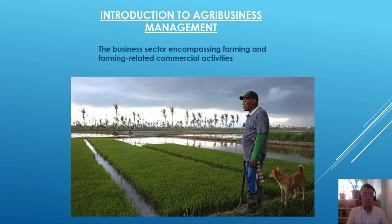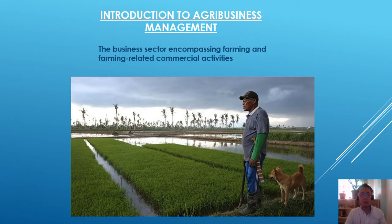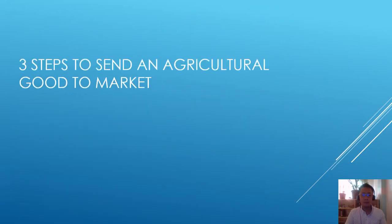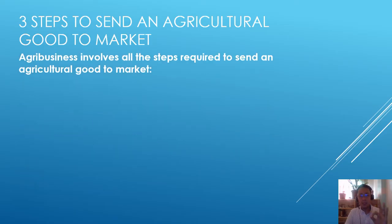First, we are going to discuss the introduction of agribusiness. Introduction to agribusiness management — agribusiness is the business sector encompassing farming and farming-related commercial activities. Agribusiness involves all the steps that are required to send an agricultural good to the market.